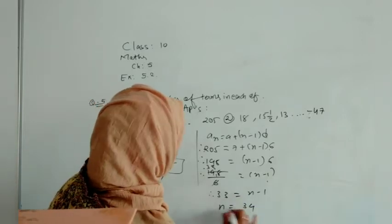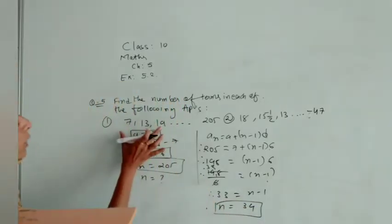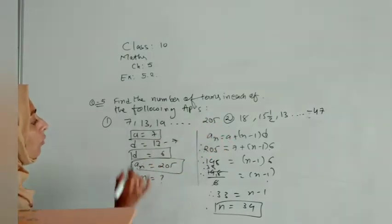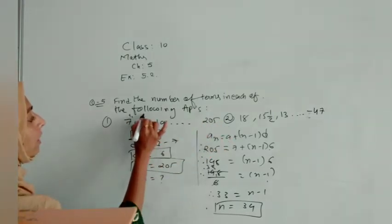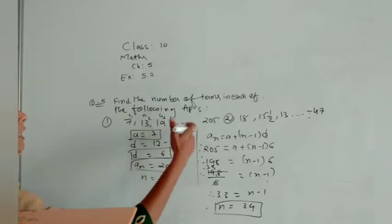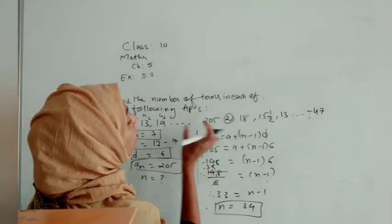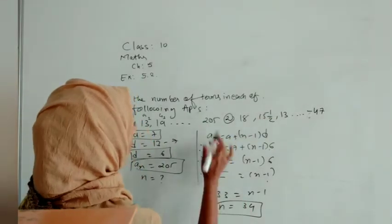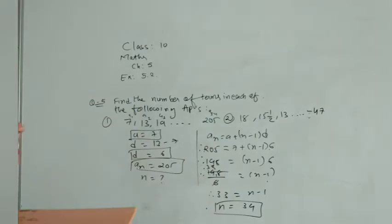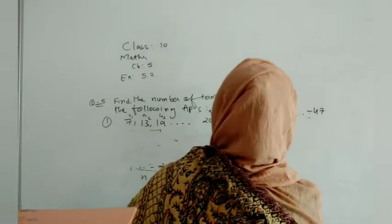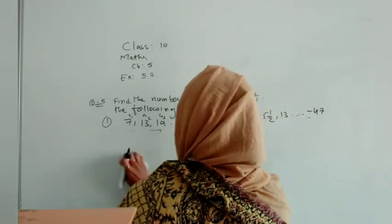Subtract: 205 minus 7. Then what kind of answer you are getting? You will get 198, then it is equal to (n minus 1) times 6. Take that 6 down and divide it. In the table of 6, 6 threes are 18, so we are getting 33 that is equal to n minus 1. So we will shift that 1 over here, so n we are getting as 34. Means this AP's 34th term will be 205.